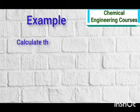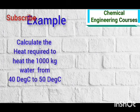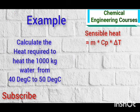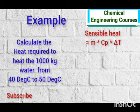the amount of heat required to raise the temperature of 1000 kg water from 40 degree Celsius to 50 degrees Celsius. To calculate sensible heat, we need the following formula: sensible heat equals mass flow rate M into CP specific heat into change in temperature.